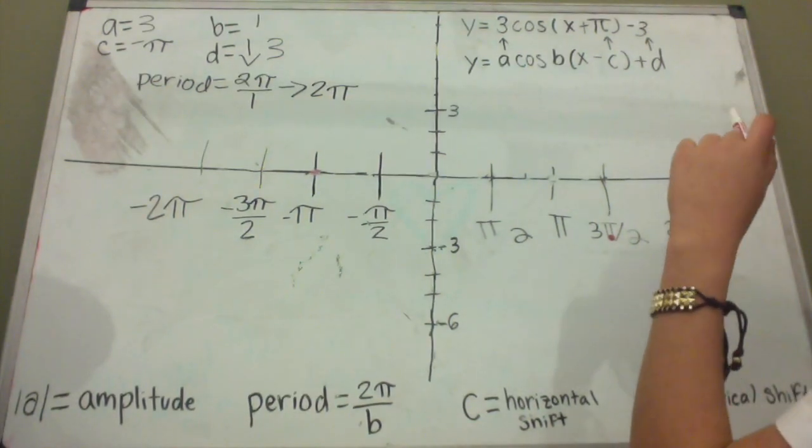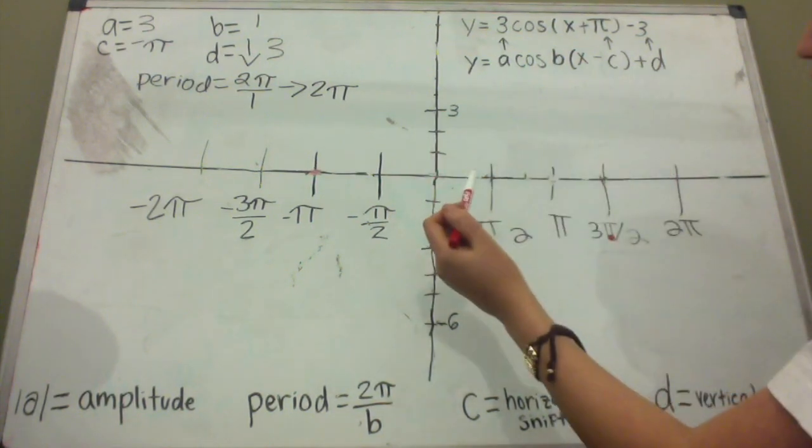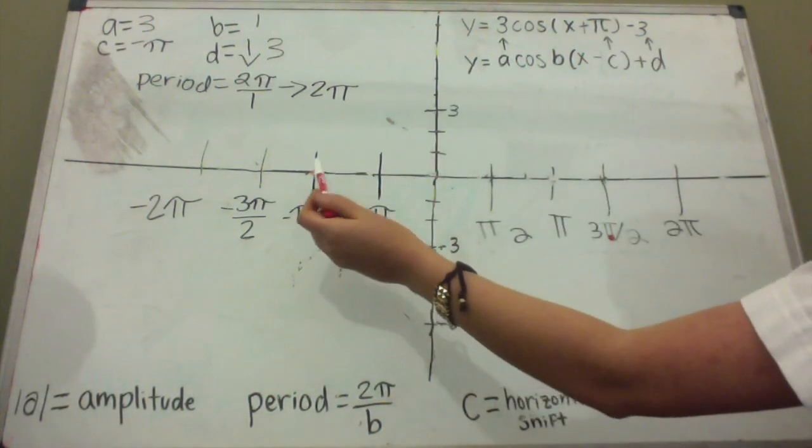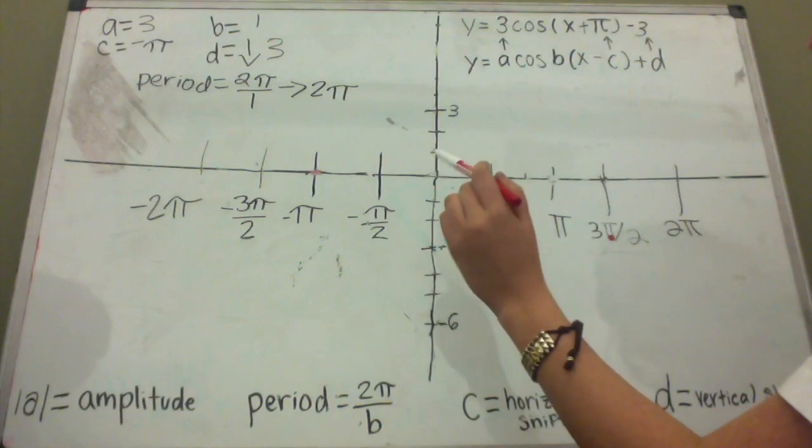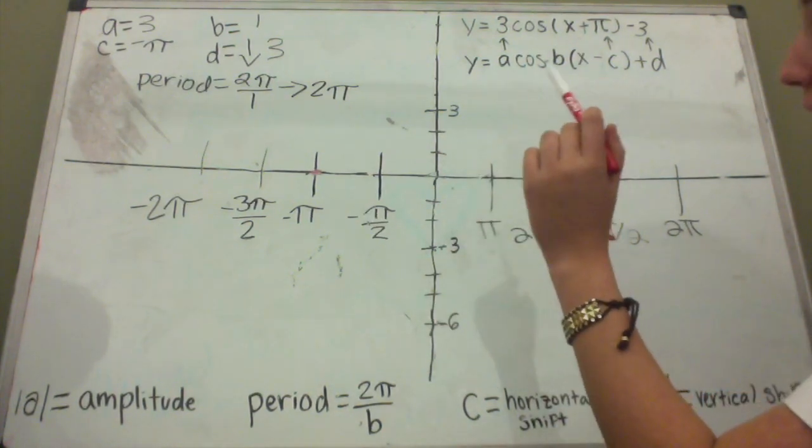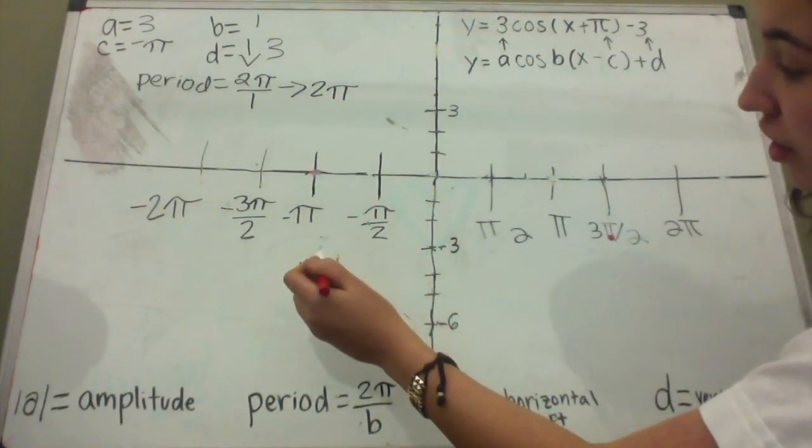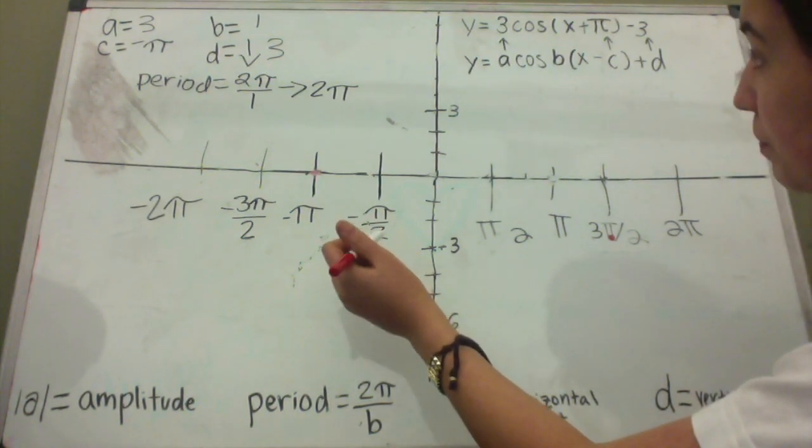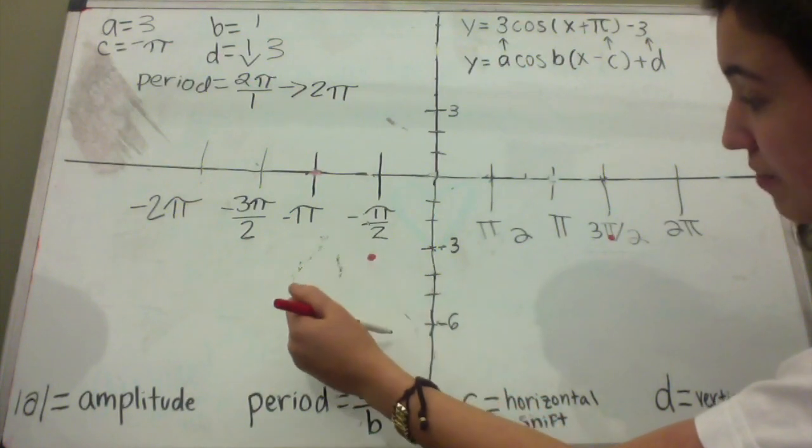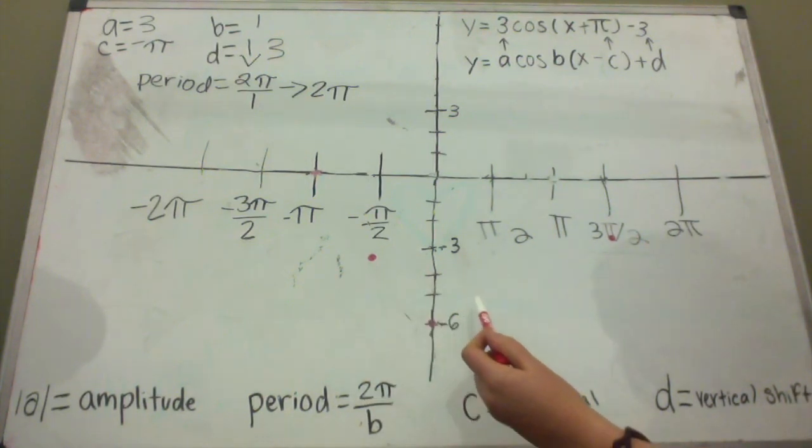So again, since we've already moved our vertical shift downward 3, relying on variable d, and our horizontal shift over here to negative π, this is going to represent the top of our cosine graph. So from here we're going to rely on our amplitude, which is going to show us how far down or how far up we're going to move along the y-axis. Since this represents the top of our graph for cosine, we're going to move down 3 spaces and over to make a mark at our next length along the period, which would be negative π over 2. And again, we're going to rely on our amplitude again and move down 3 to our next length along the period, down here at negative 6, and make a mark. And so we're going to move up 3 in this case since we've moved down 2 to our next length along the period.